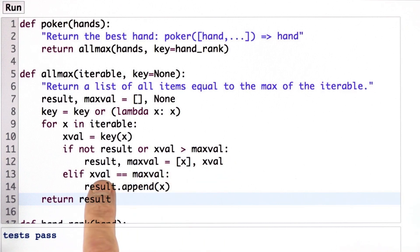If it's a tie, then I just want to append x onto the list of results that I've been building up all along. And then at the end, I want to return the result.